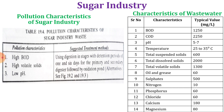Each parameter has a typical value in the sugar industry. For example, BOD is 1 to 150, pH is 5 to 7, and sulfate is 500 mg/L. These are the typical characteristics in mg per liter observed in sugar industrial wastewater.